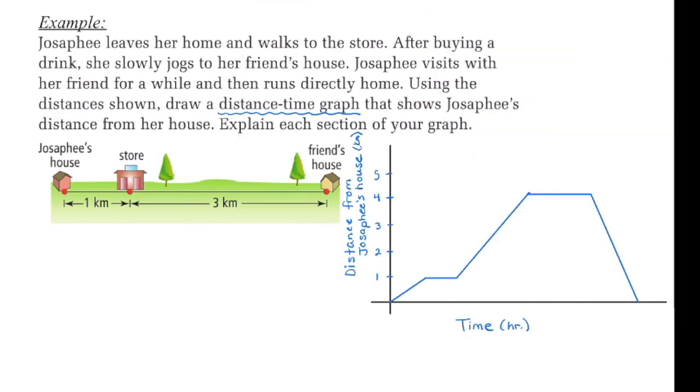Because we aren't given any specific time values, I didn't put a scale on my x-axis. I just left it with a label of time. We know Josephine leaves her home and walks to the store. So that's my first line segment here. And then she buys a drink. So I have a horizontal line because time is going to pass and her distance isn't changing. She's going to be at the store.